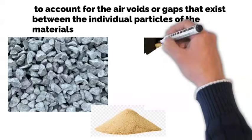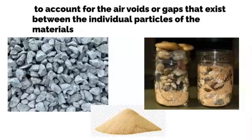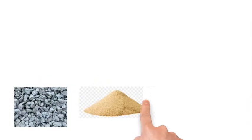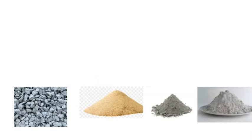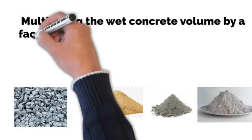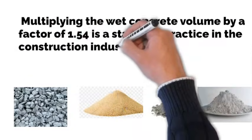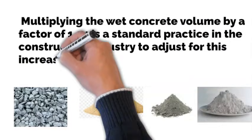To ensure that the final concrete mix has the correct proportions of cement, sand, and aggregate, it is important to account for the void ratio. Multiplying the wet concrete volume by a factor of 1.54 is a standard practice in the construction industry to adjust for this increase in volume caused by the voids.